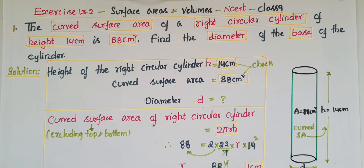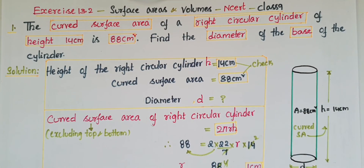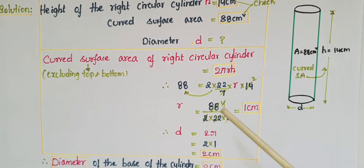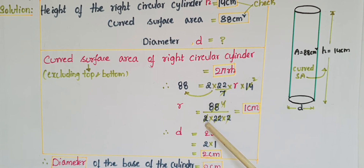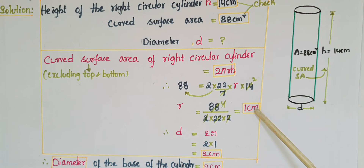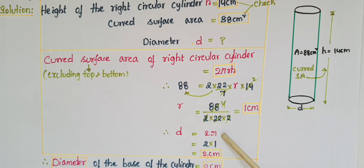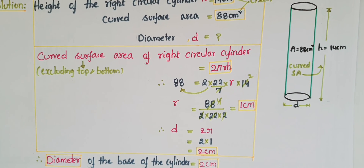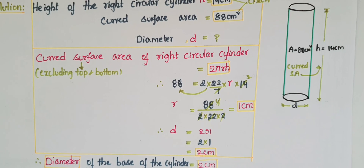Solving: 2 into 22 is 44, and 44 into 2 is 88 — the 88s cancel and the 4s cancel, giving r equal to 1 centimeter. Diameter is twice the radius, so diameter equals 2 into 1 equals 2 centimeters. Therefore, the diameter of the base of the cylinder is 2 centimeters.